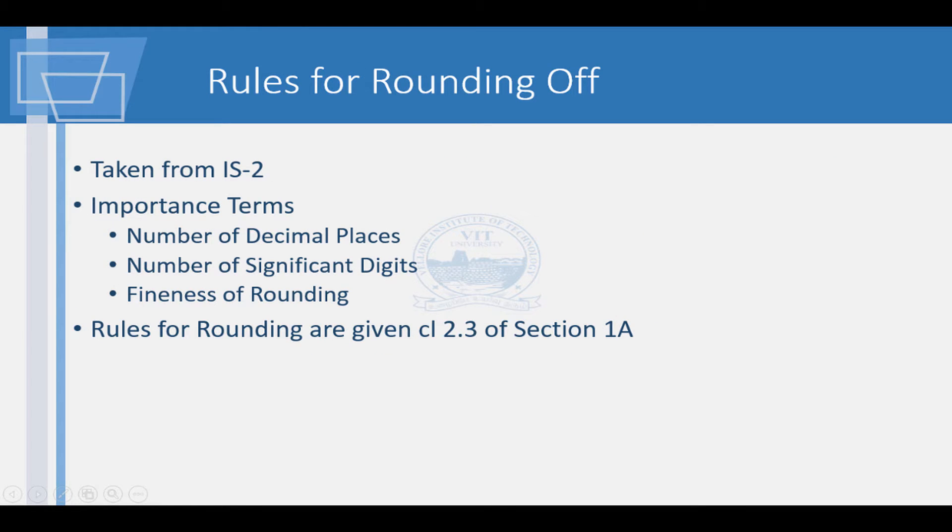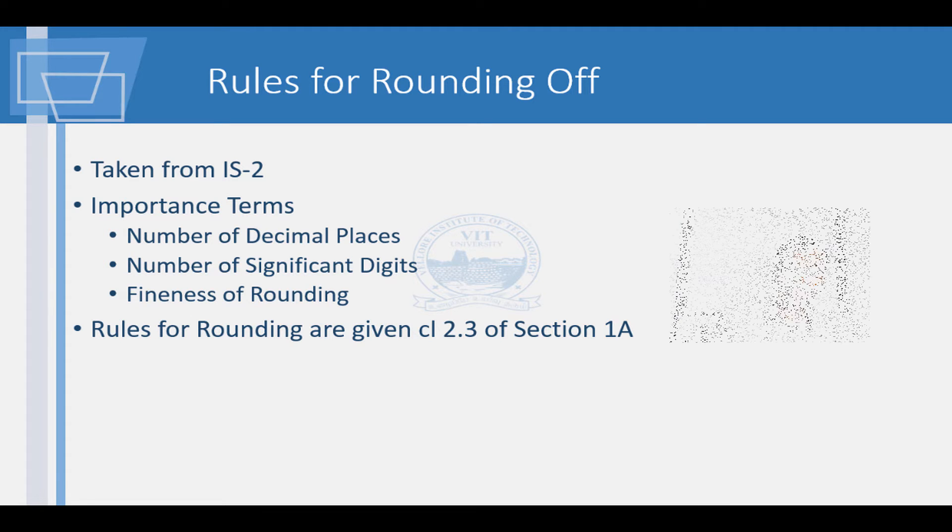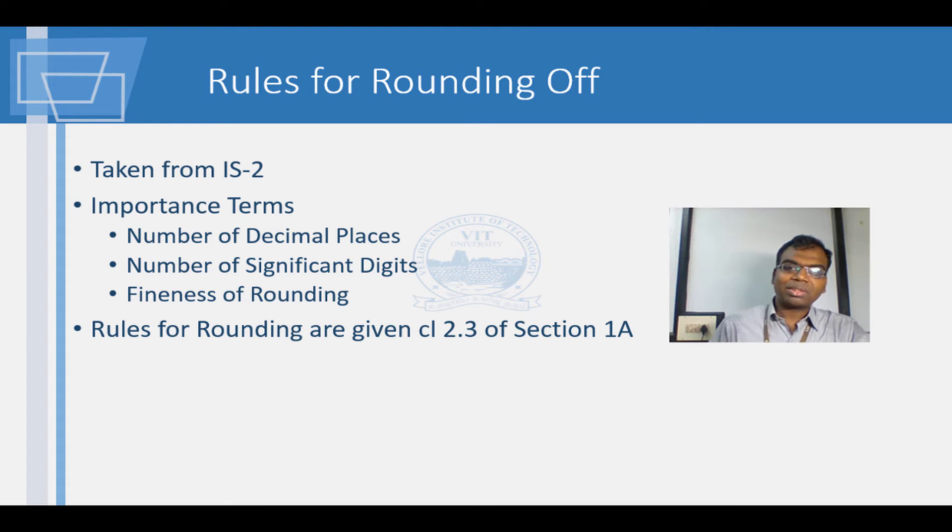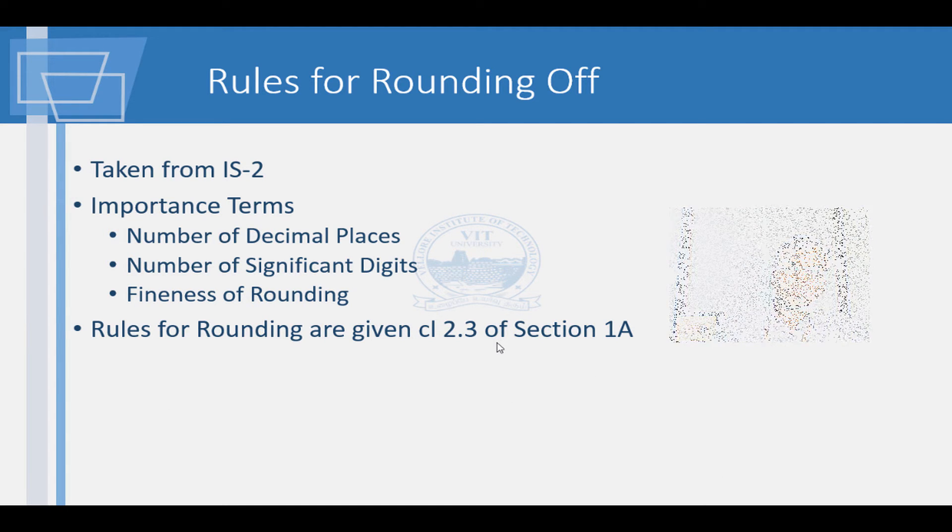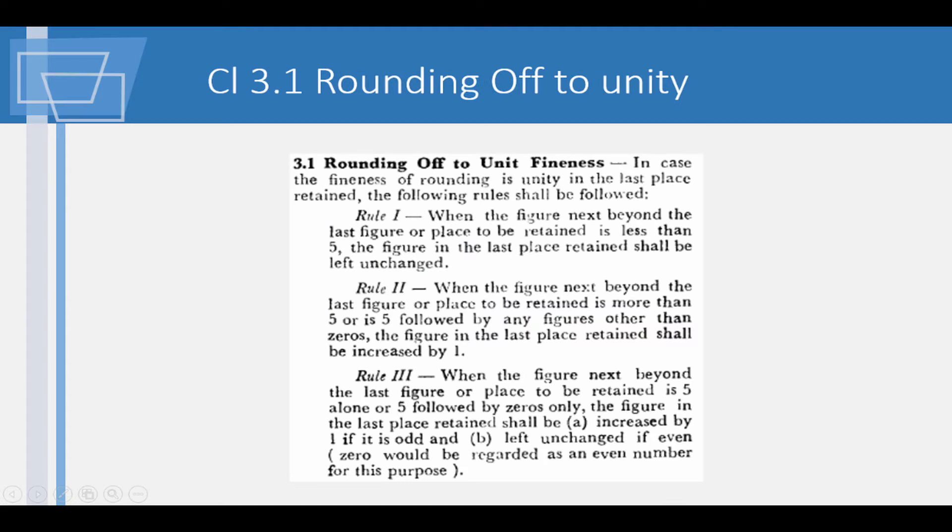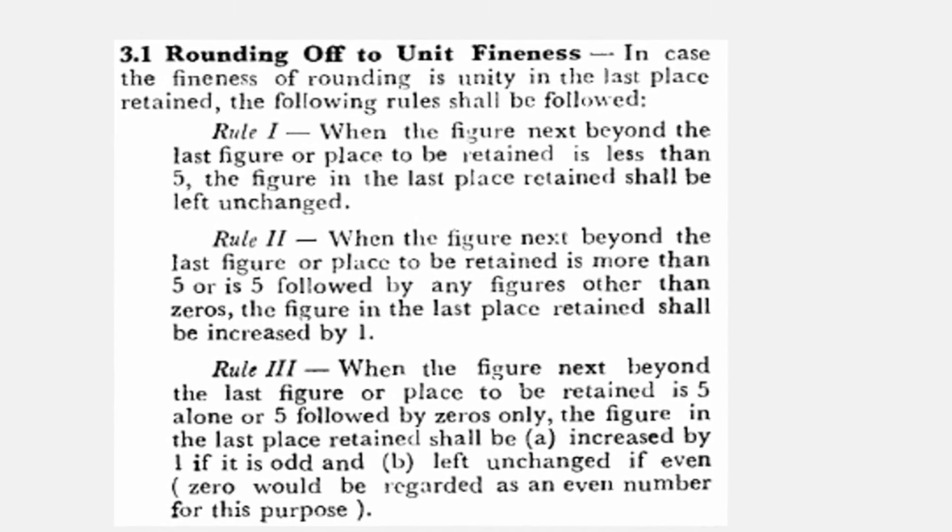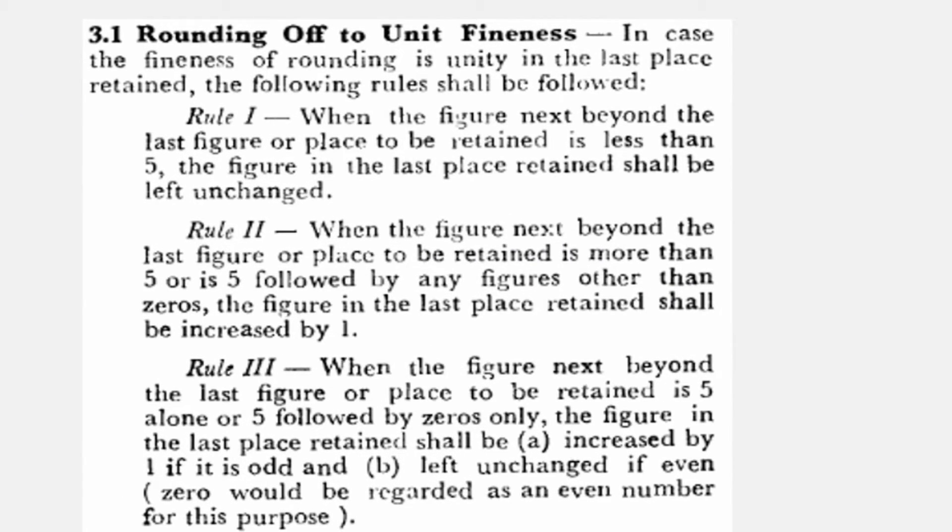SP27 has incorporated IS-2 to give rules for rounding of values. These include definition for number of decimal places and number of significant figures. Rules for rounding to a degree of fineness is also specified. Fineness of rounding is the unit to which the rounding is done. Details are given in class 2.3 of subsection 1a. The rules related to rounding to unit fineness is in class 3.1. Here are the rules.